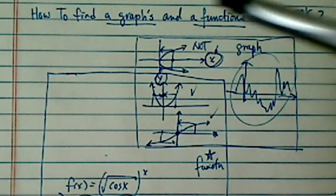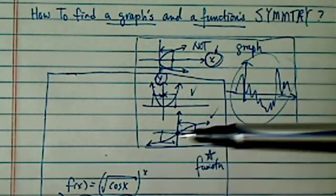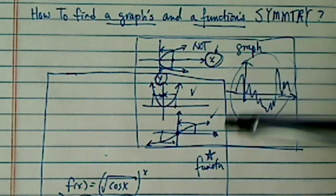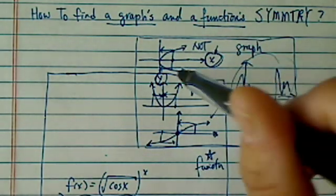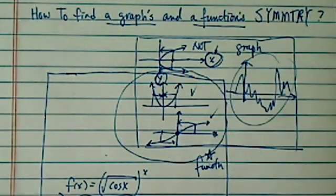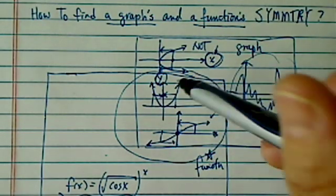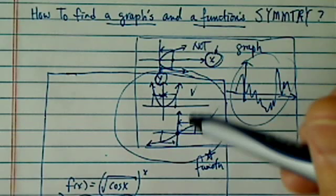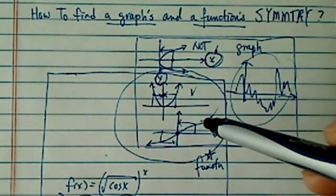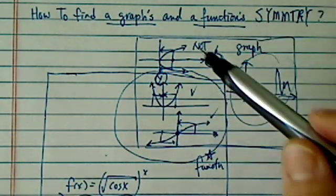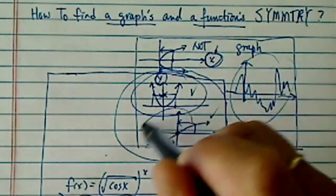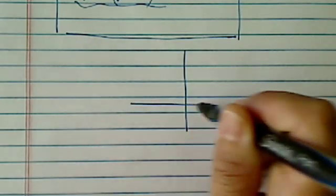So a graph doesn't have to be a function, and likewise a function doesn't have to be a graph. But when a graph is a function and it has symmetry, it becomes very interesting. And those are the type of functions and graphs that we want to take a look at for this clip. It turns out those two types of graphs, one that's symmetrical against the y-axis.